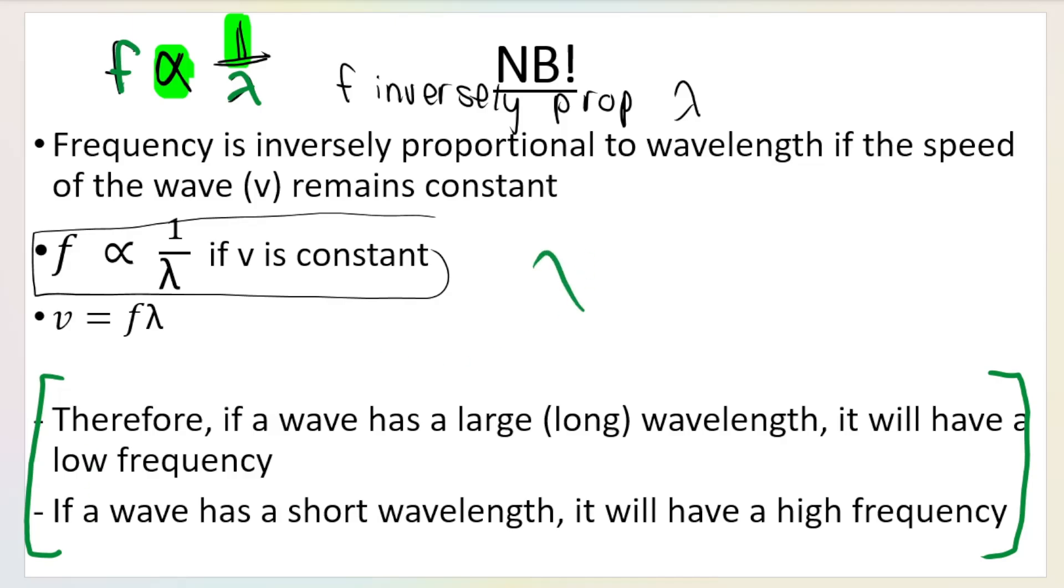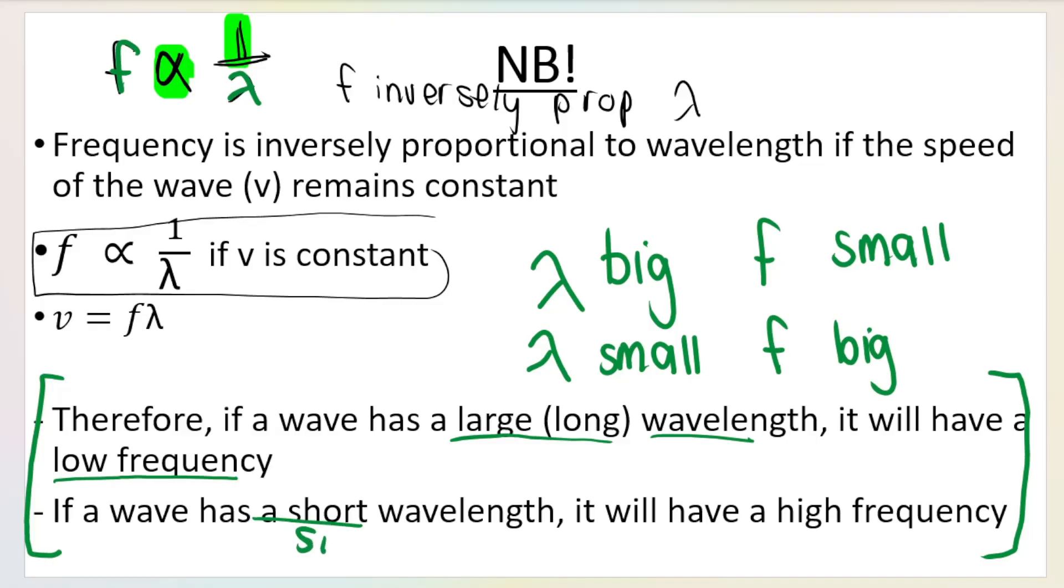Just know that if wavelength is big, frequency is small. A large or long wavelength means a low or small frequency. And in the same way, if wavelength is small, what does that mean about frequency? It means that frequency is big or high. A short or small wavelength will have a high or big frequency. Those two sentences I do want you to know.